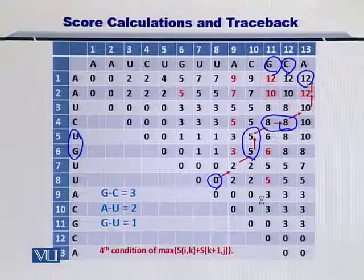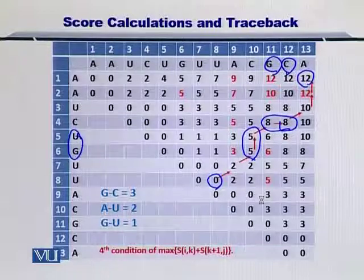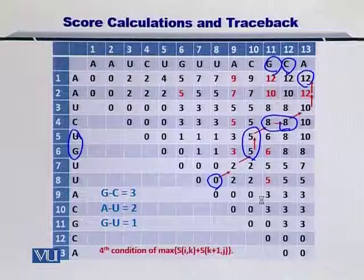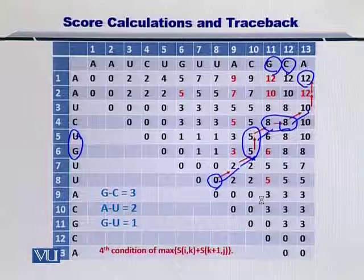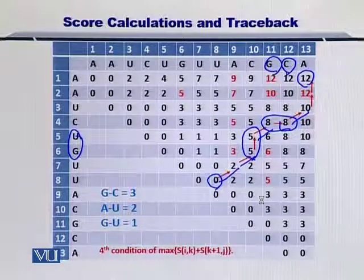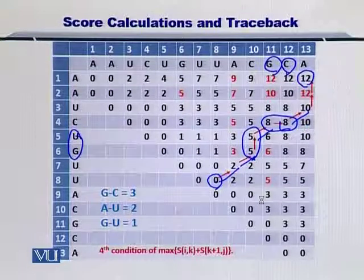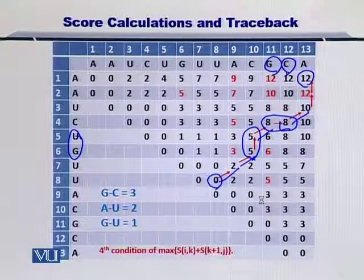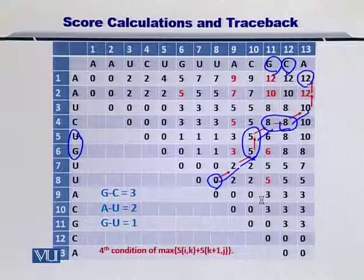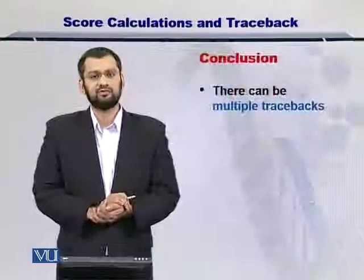Therefore you need to know that the bulges should be minimized. Hence, an ideal traceback would essentially only comprise of diagonals. But as you know, there are situations where two nucleotides cannot be coupled and are therefore not in the diagonal. Hence, you have to introduce that nucleotide as a bulge. Once you have completed the traceback, then you are ready to look at the secondary structure.